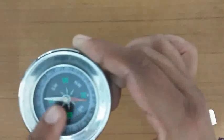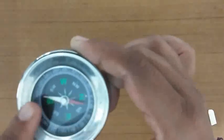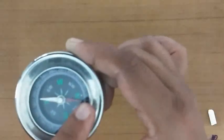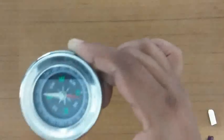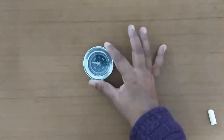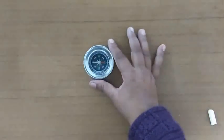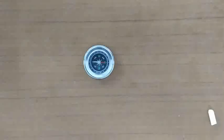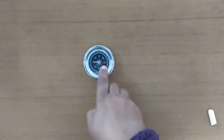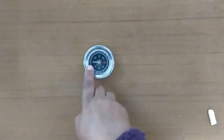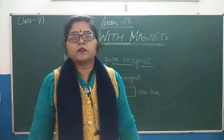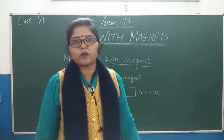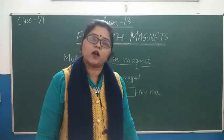You can see the compass needle — it is magnetic. One side is painted red to show which direction is north. When we keep this at rest, you can see the red end is pointing towards north, and the other end is pointing towards south.